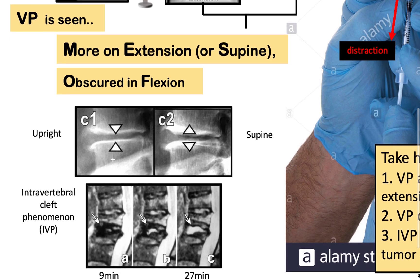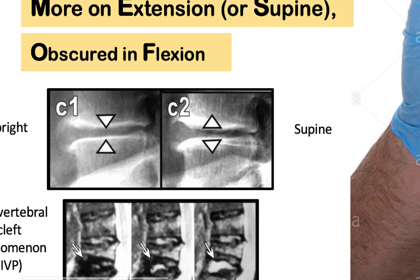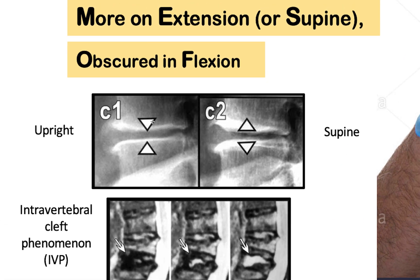Now let's look at some examples. These are sagittal CT images of the lumbar spine in which we can see that there is joint degeneration in the form of end plate sclerosis. We have osteophytes here and decrease in the height of the intervertebral discs. In the upright position, the vacuum phenomenon is hardly seen. However, in the supine view where there is distraction forces from the paraspinal muscles, the vacuum phenomenon is better delineated.